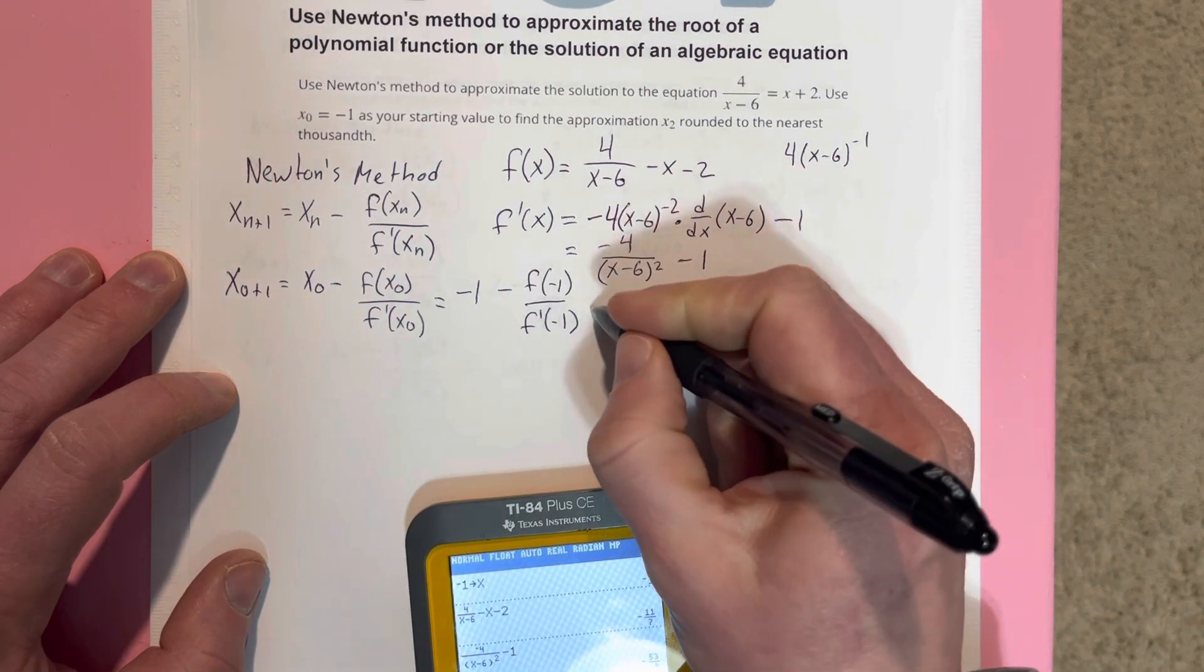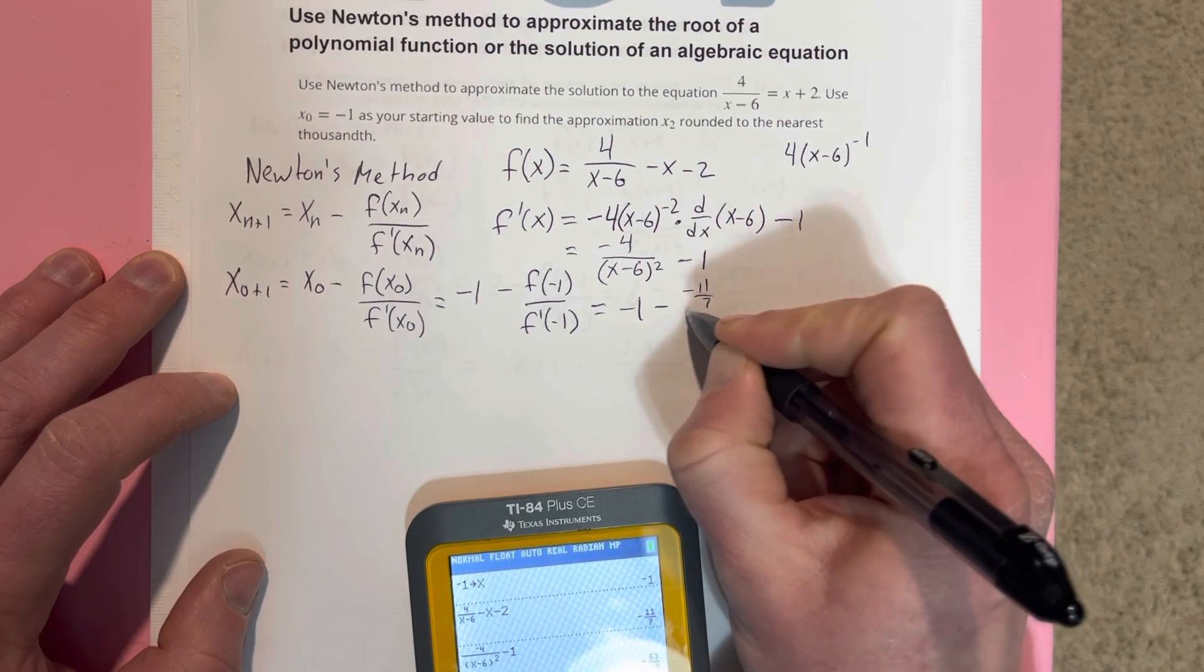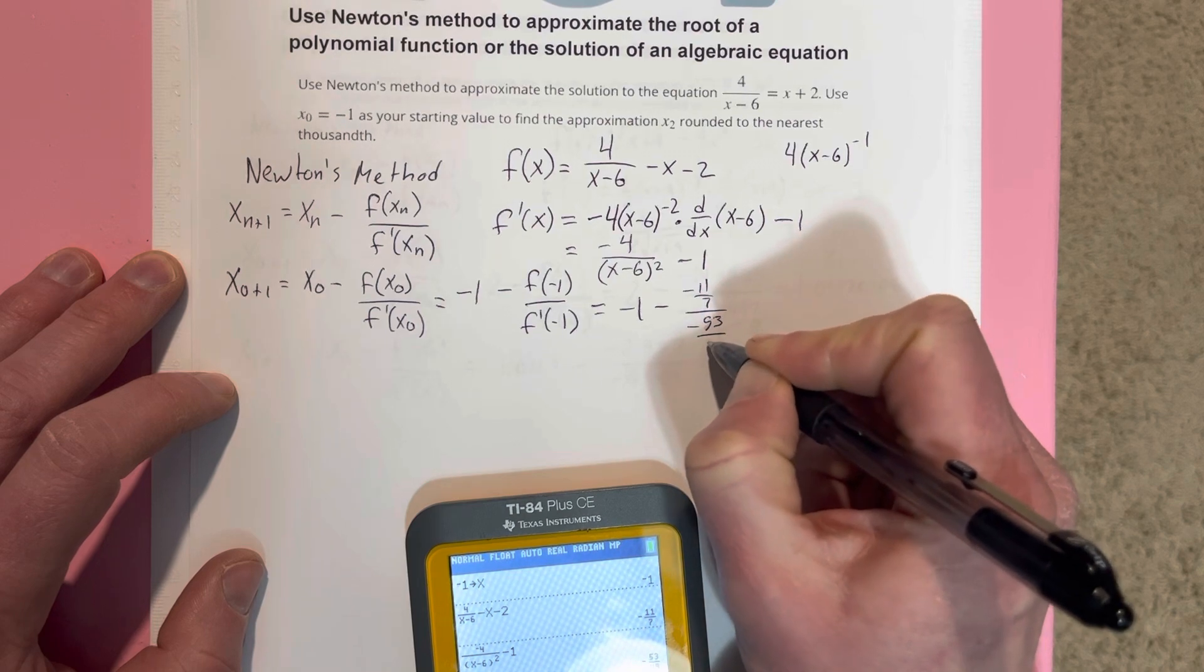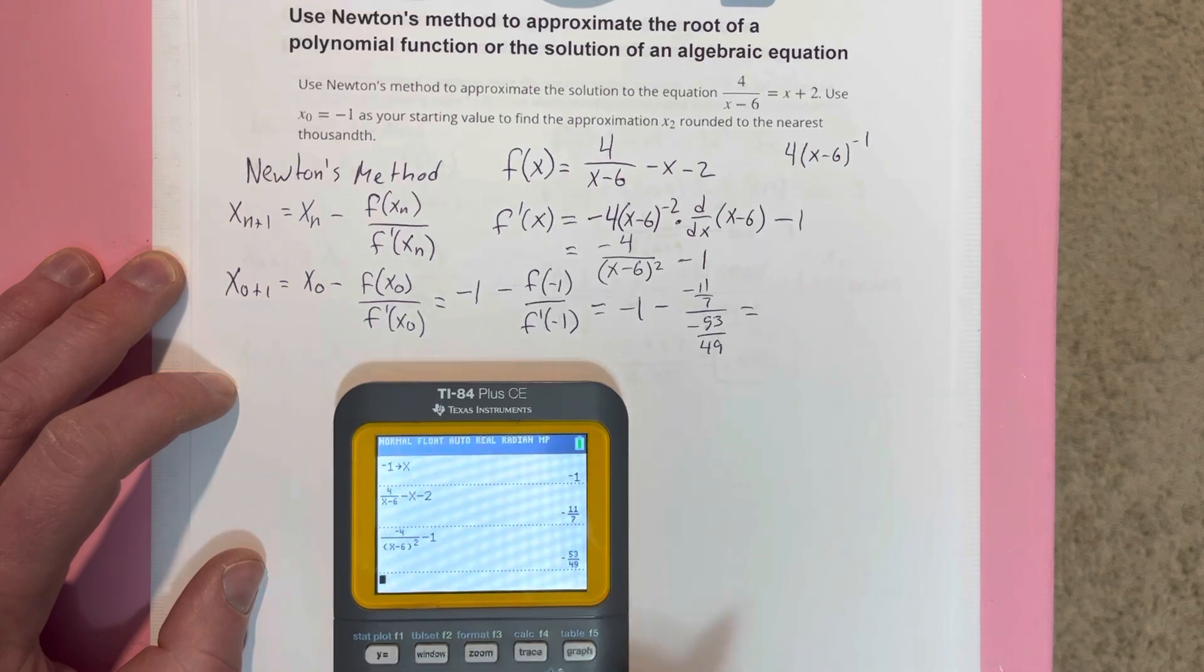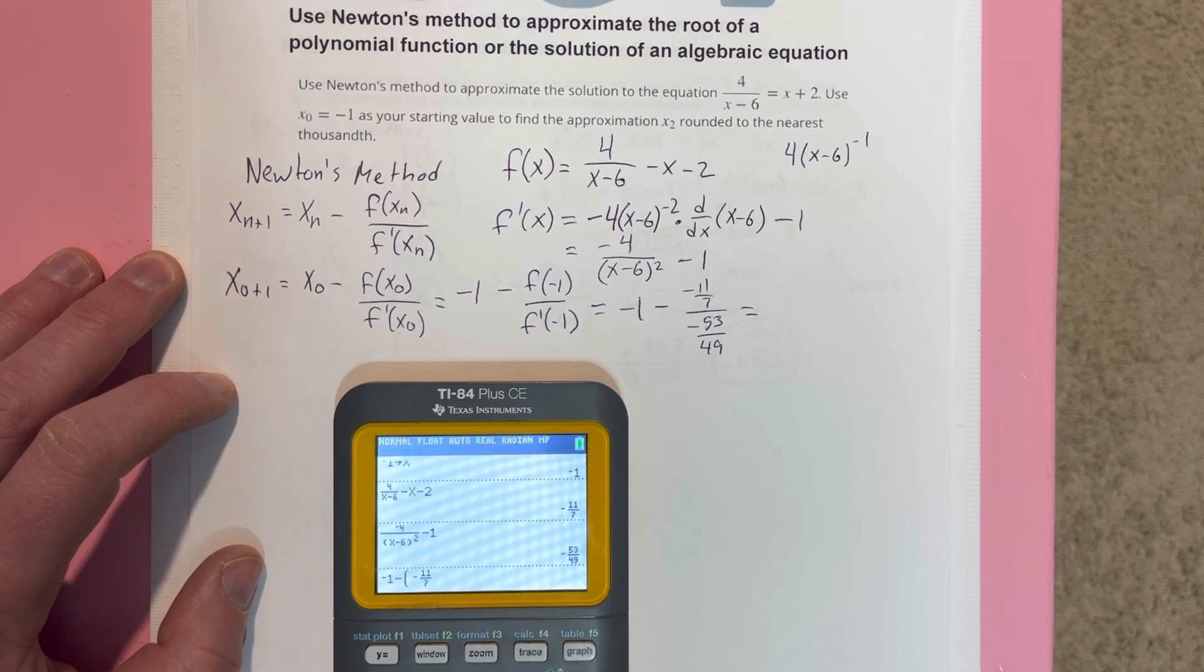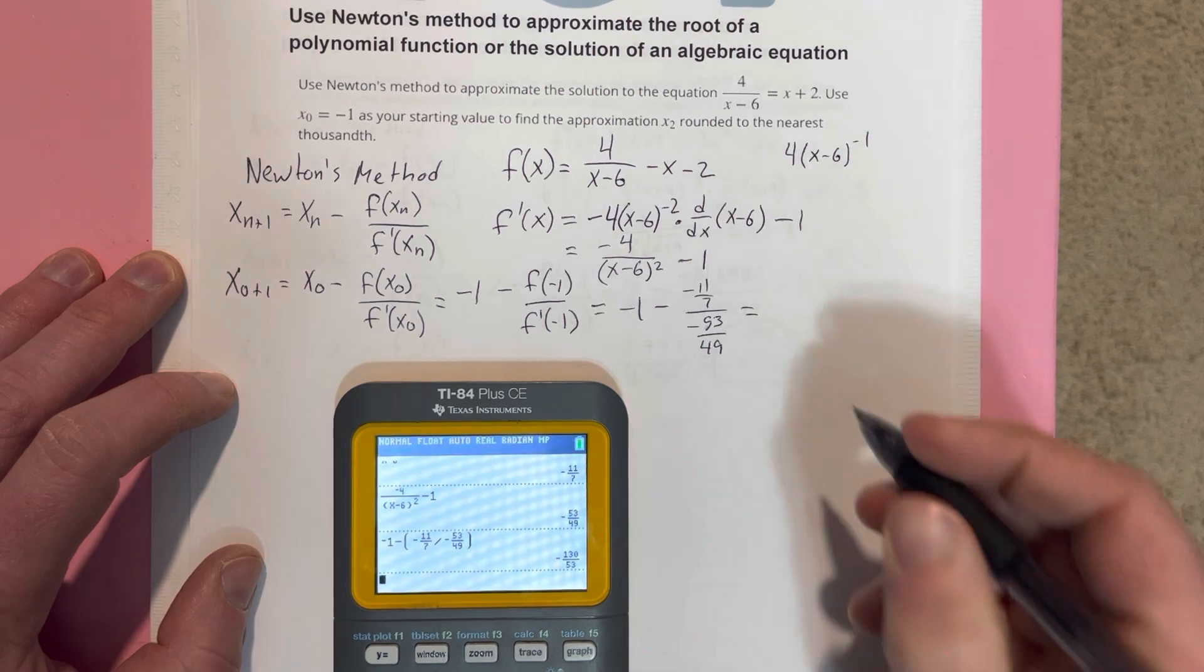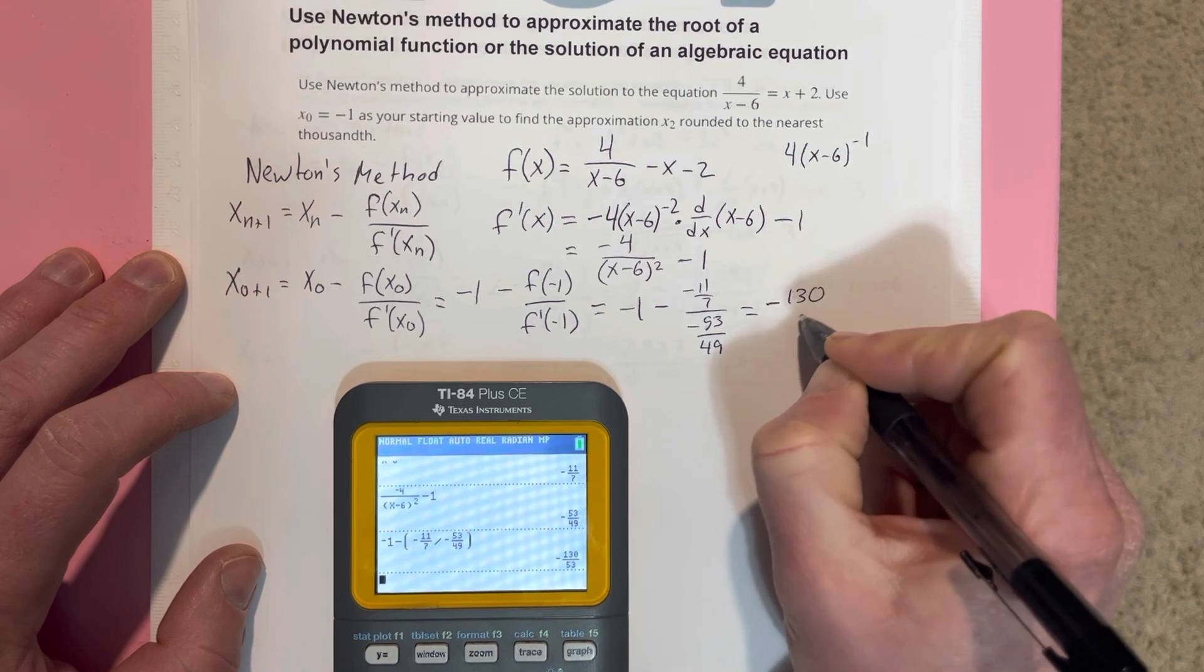So we're going to write this as negative 1 minus negative 11 over 7 over negative 53 over 49. I'm going to throw that in the calculator. I'm going to do negative 1 minus this number divided by this number. We get negative 130 over 53.